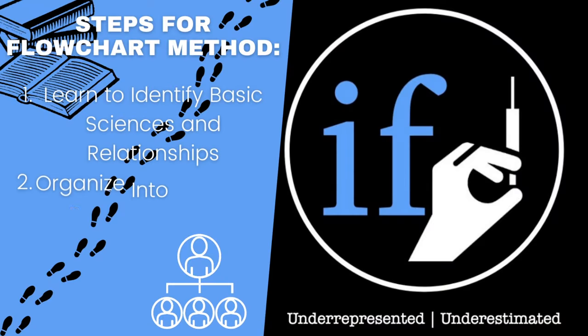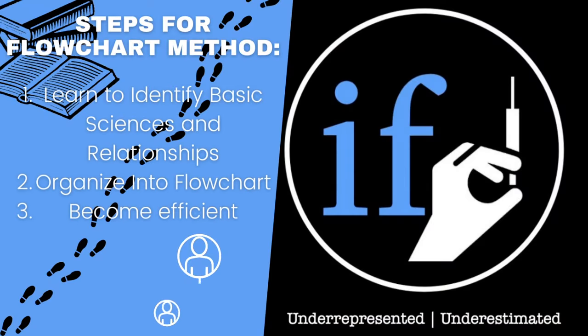The three steps to mastering the flowchart method include: understanding what classifies as a basic science and a relationship, learning how to organize them into a flowchart, and then becoming efficient. Because when you first start this, it's going to take you a lot longer than the four minutes you're actually allotted. But in subsequent videos, I'm going to show you some drills and ways to practice and actually improve your speed.